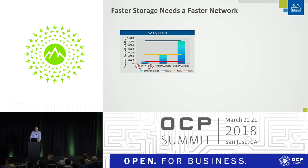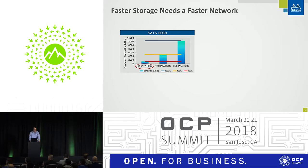Now we also need to get the wires faster. This chart shows the number of hard disks it takes to fill a 10 gig, 40 gig, and 100 gig network adapter. The blue is 100 gig, the red is 10 gig, and the yellow is 40 gig.